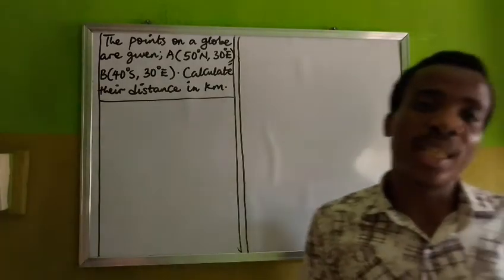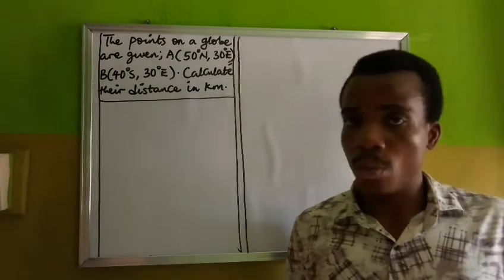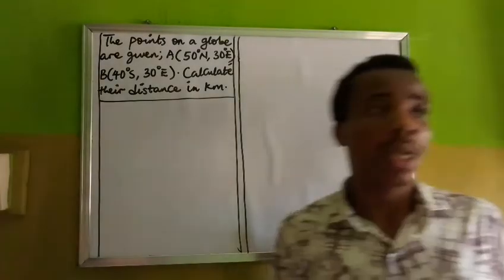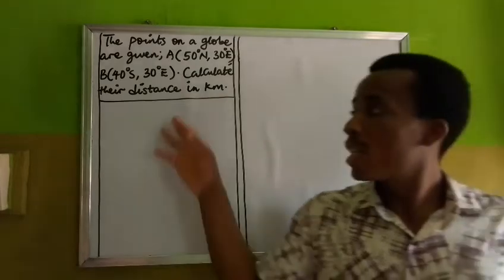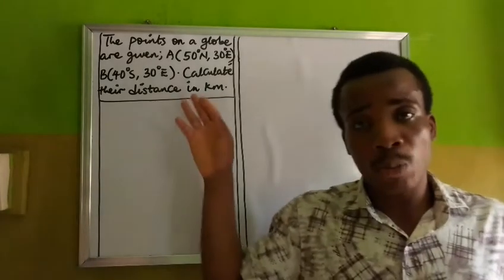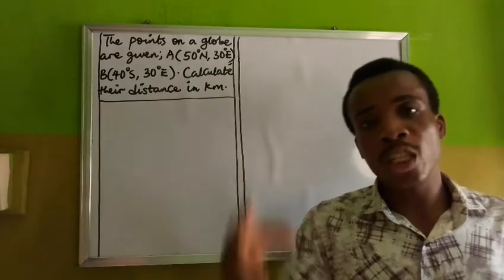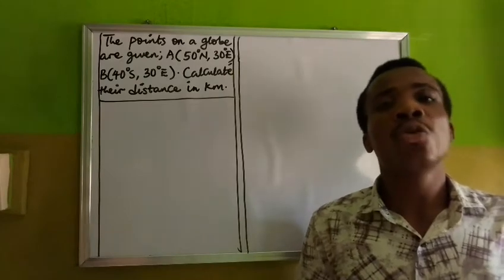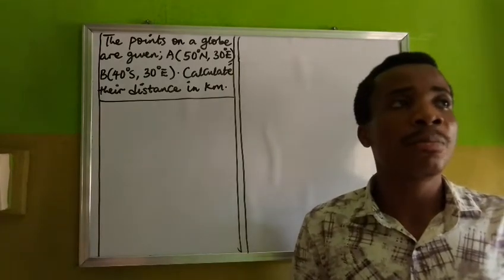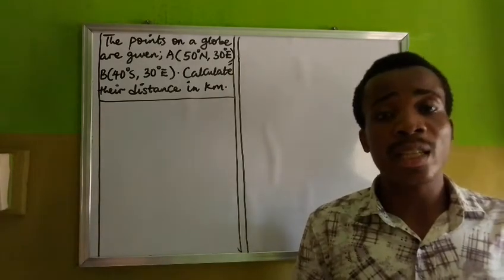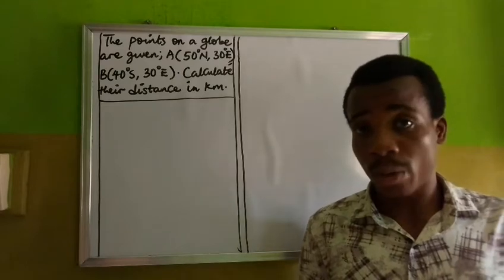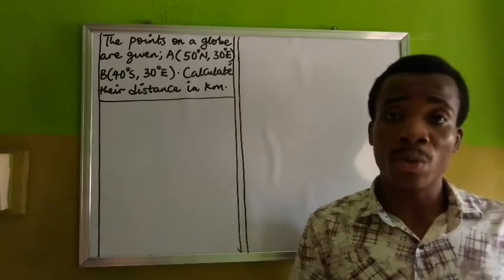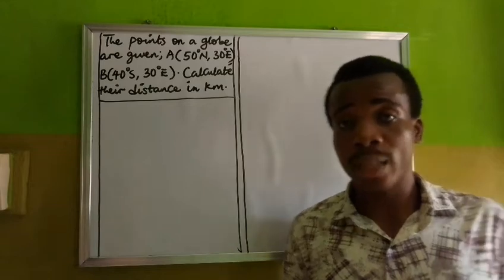Because we are dealing with distance on the globe, it implies that we are making reference to longitude and latitude. For us to calculate the distance of these points, we need to first locate these points on the globe, and we also need to determine if it is a distance involving the great circle or the distance involving the small circle.